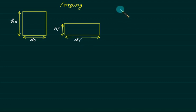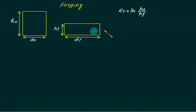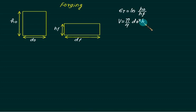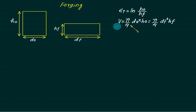The true strain for forging is defined as the natural log of initial height H0 divided by final height HF. Since no material is wasted, volume remains constant: (π/4) × D0² × H0 = (π/4) × DF² × HF. If any dimension is missing, use this volume conservation equation to find the true strain.